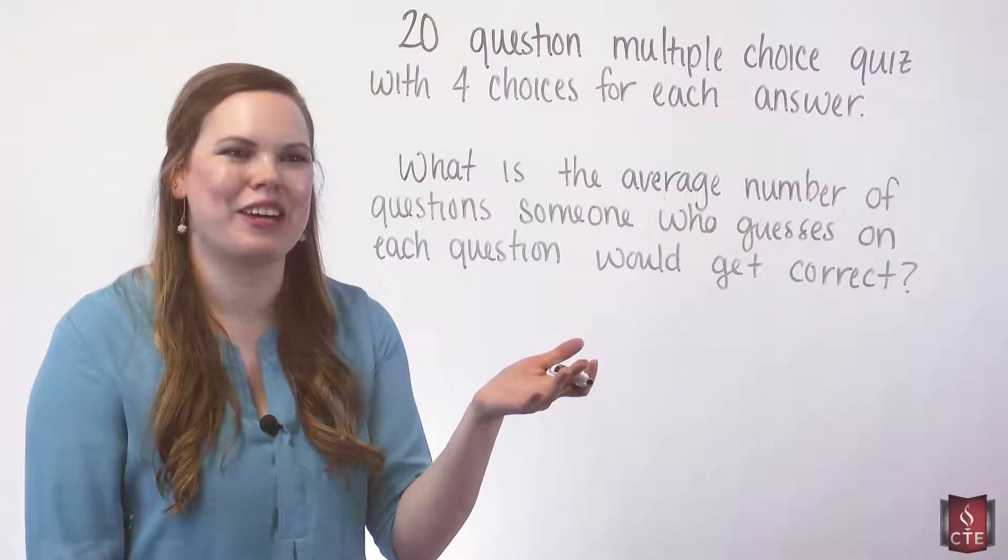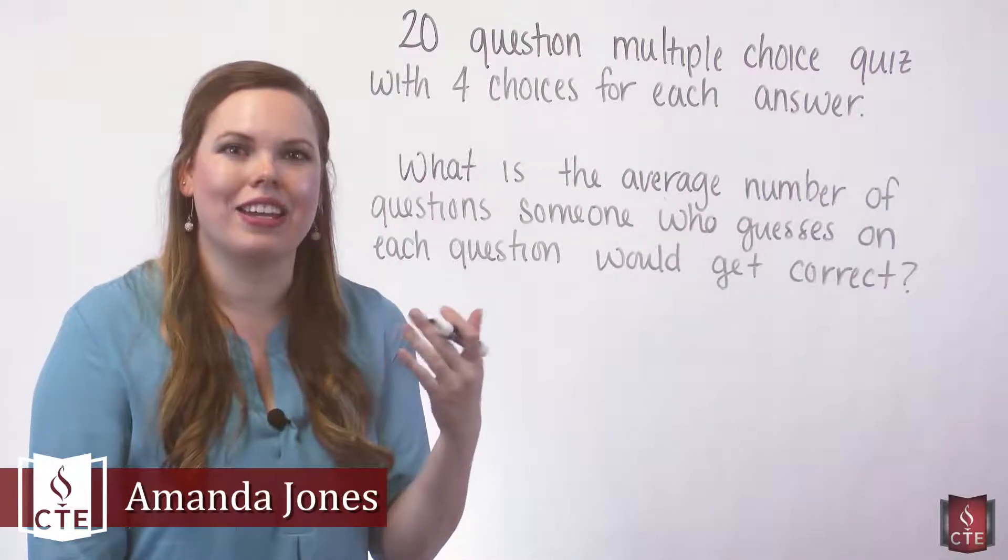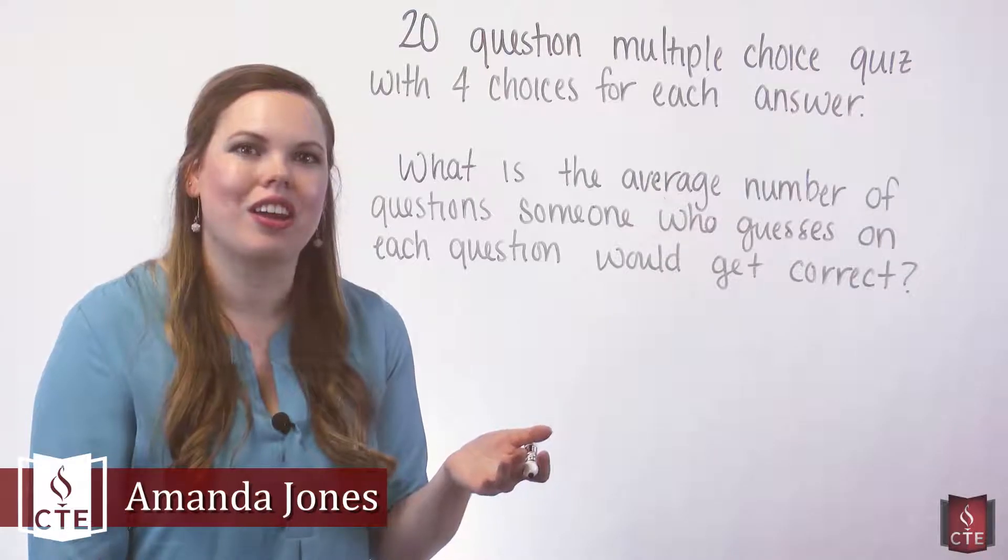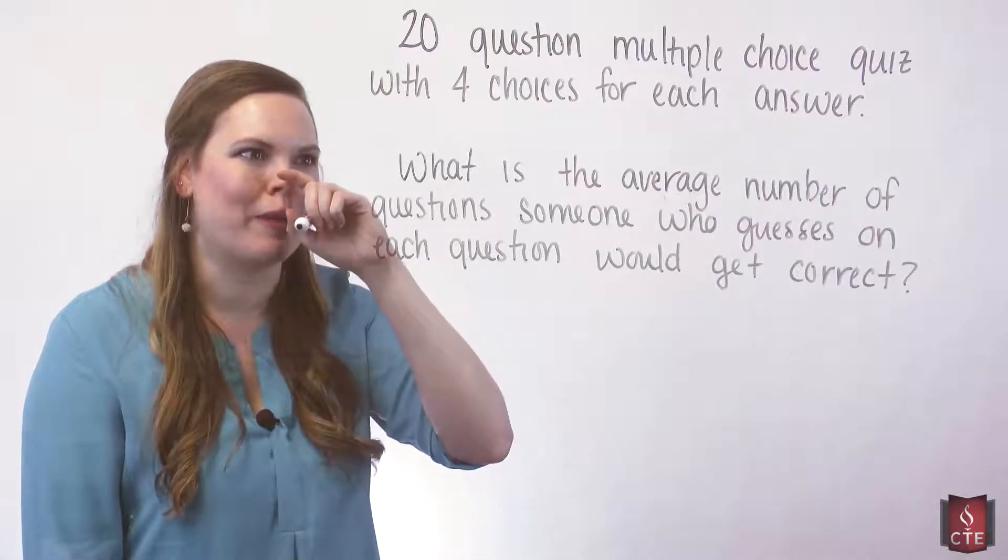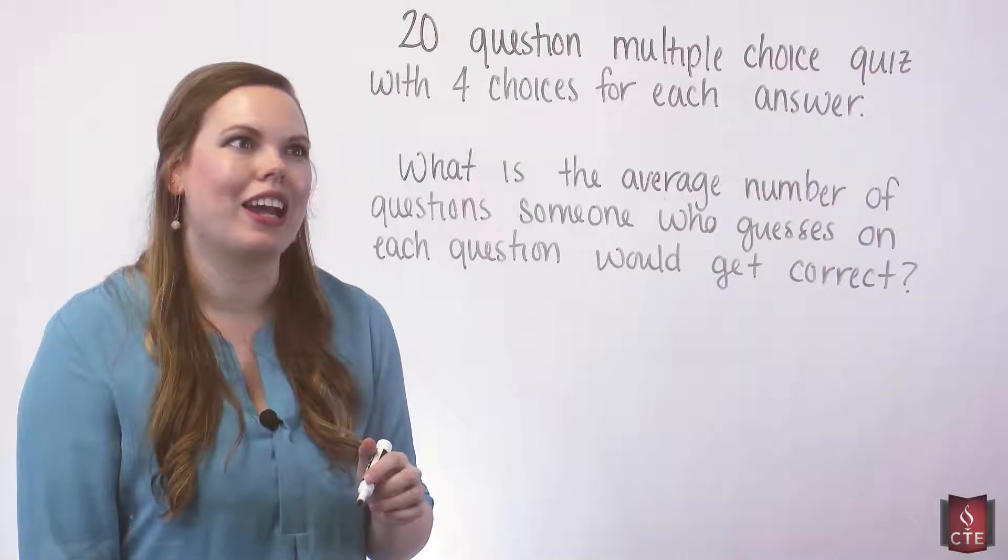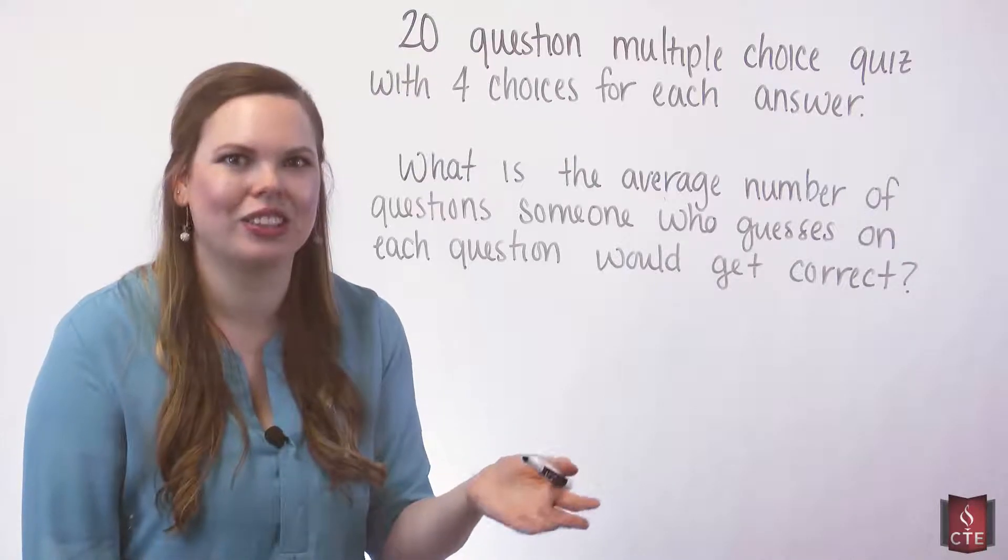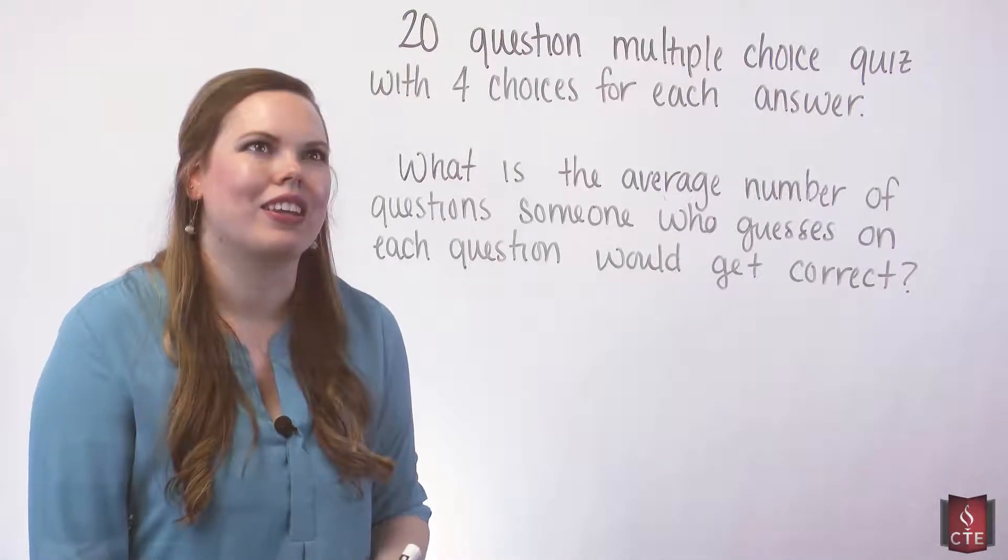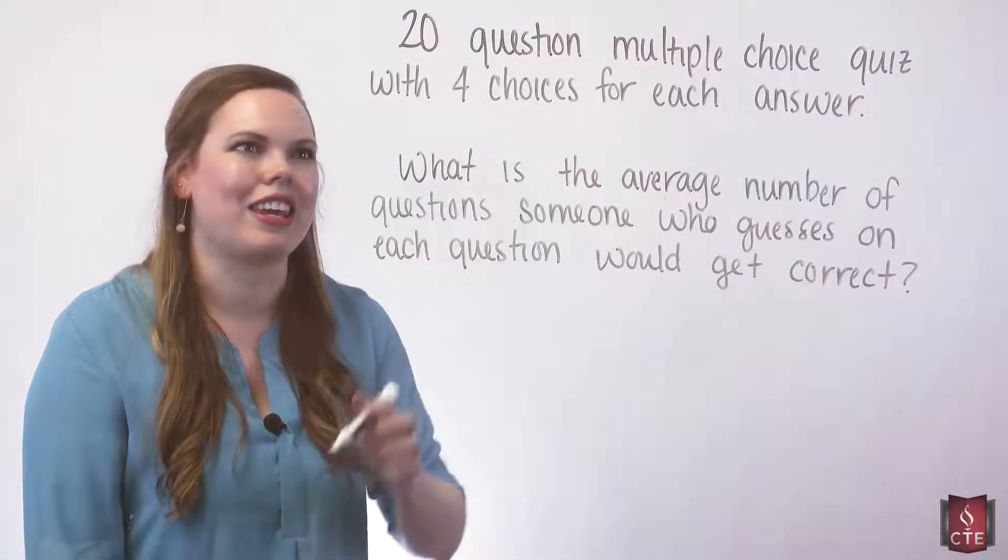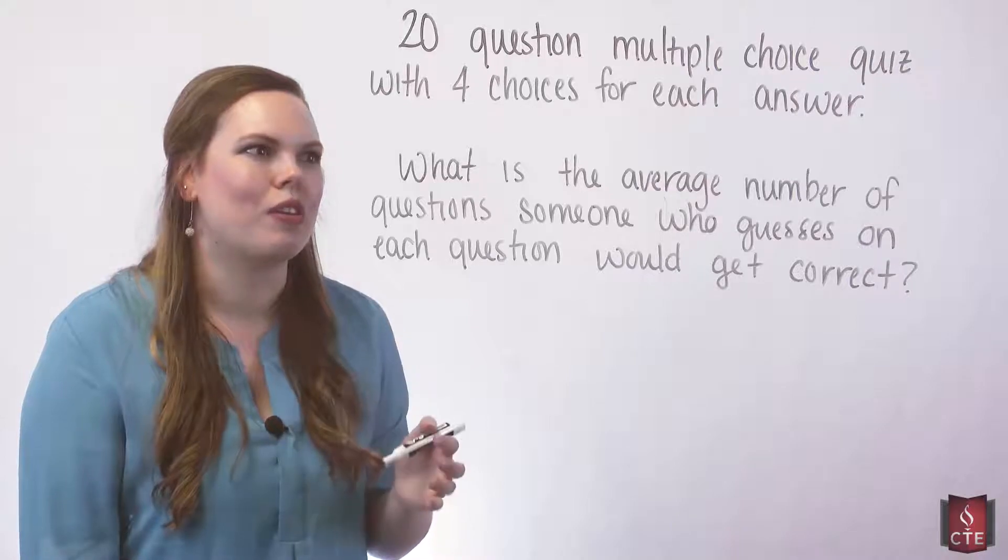We're going to look at an example where we need to find the mean and the standard deviation of a binomial experiment. This is a binomial experiment because we're either getting the question right or wrong, so it has two outcomes. These are independent, the probability of a success each time is the same, so we know it's binomial.